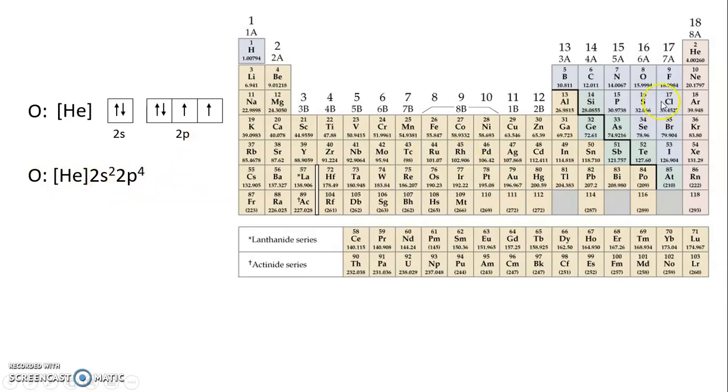If we now consider making that the oxide ion, we're going to add two electrons, right? Remember that oxide is the only ion that we expect to find of oxygen in compounds, O2-. So we've added two electrons,